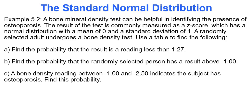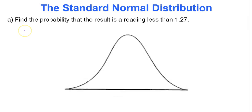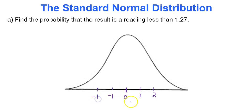A bone mineral density test can be helpful in identifying the presence of osteoporosis. The result is commonly measured as a z-score, which has a normal distribution with a mean of 0 and a standard deviation of 1 — that's always the case for z-scores. A randomly selected adult undergoes a bone density test. We'll start with the probability that the result is a reading less than 1.27. Always draw a picture — in this module, draw a picture for every single question. Label the mean of 0 in the middle, and mark 1.27 somewhere between 1 and 2.